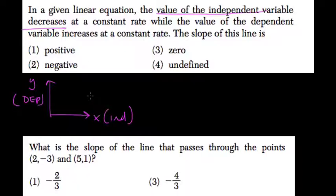So the x values are decreasing at a constant rate, while the value of the dependent variable increases. So maybe x is at 3. Here's 2 and 1. As you go down with 3, 2, 1, y, the dependent variable is going up.